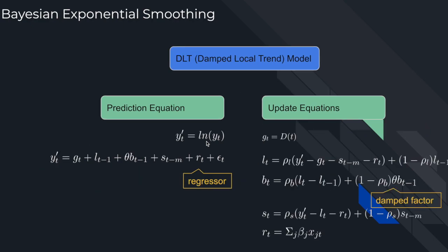Here is another type of model in orbit called the DLT model, which means Damped Local Trend model. In the prediction equation, we introduce an additional term — the regression term — meaning external regressors are allowed in DLT. On the right side are the update equations for DLT. D_t means the global trend process; choices of such process can be linear, log-linear, or logistic. Also, in the update equation for the slope B_t, we introduce a damped factor parameter, which allows decay over time — this is very useful in practical modeling. R_t is the regression term, and beta_G is the regressor coefficient. The prior for beta_G can be a normal distribution, with a hierarchical sigma following a half-Cauchy distribution.